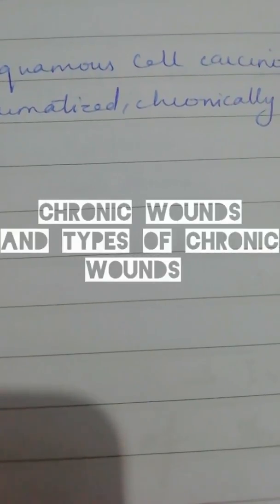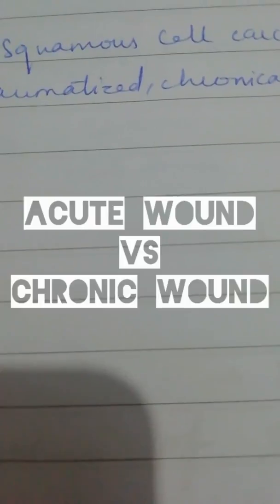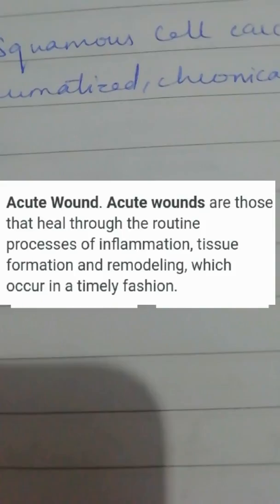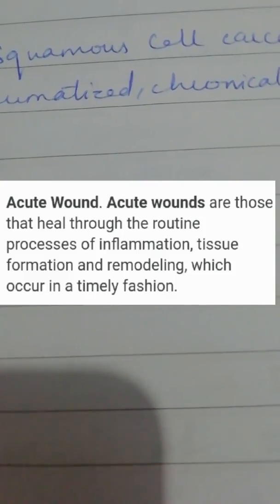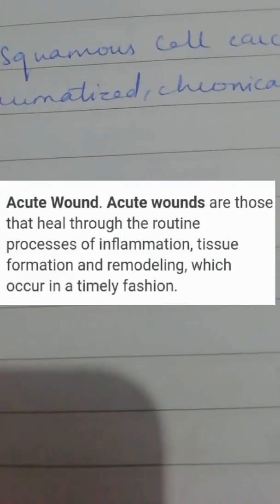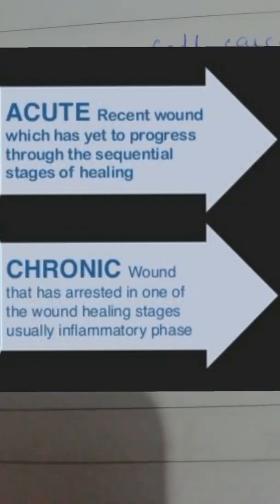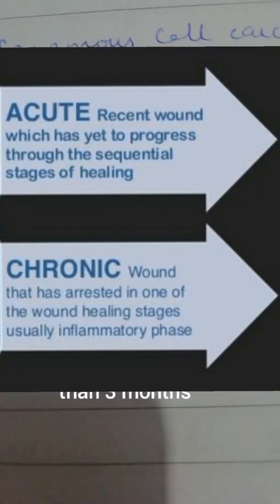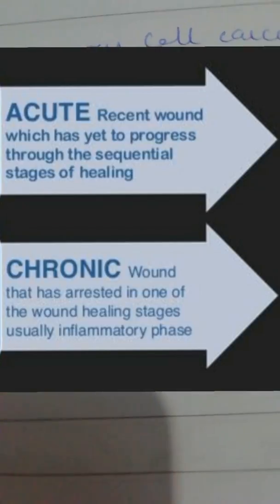In this video we are going to be discussing chronic wounds and their types. We will start with the difference between acute and chronic wound. Any wound that completes all stages of healing — which are inflammation, proliferation, and remodeling — within three months is said to be acute. But if the wound gets arrested in any one of the stages and persists for a time longer than three months, then it is said to be a chronic wound.